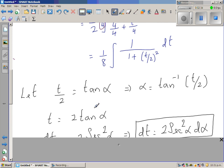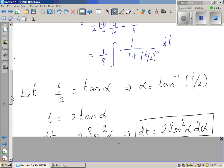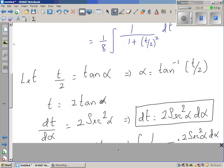If you make t the subject, t equals 2 tan alpha, and differentiating with respect to alpha, dt equals 2 sec squared alpha d alpha.